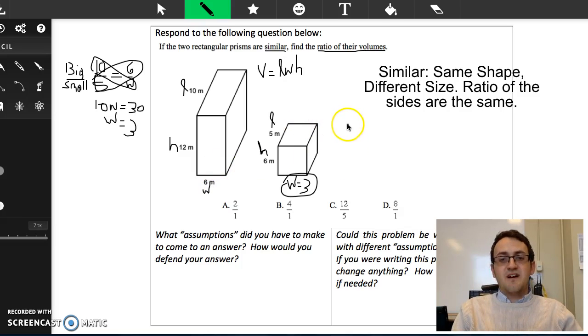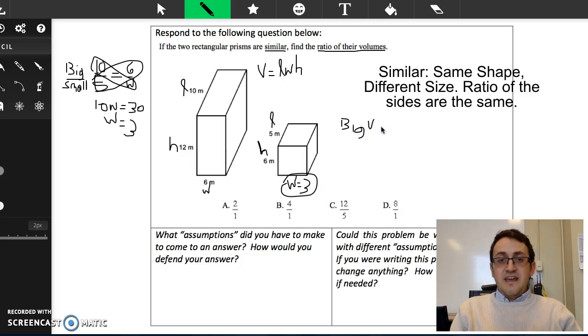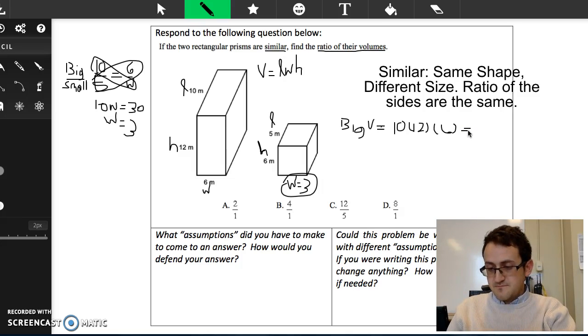So now we're going to compute the volumes of the two shapes. It's asking us to find the ratios of the volumes and we're assuming that it is the big shape to the small shape. So I'm going to still do big to small, so I'm going to do big volume first. I'll call it big V. And I'm going to use my length times width times height, so I get 10 times 12 times 6. And when I go to my calculator to compute that, or maybe you can even do it in your head, I get 720.